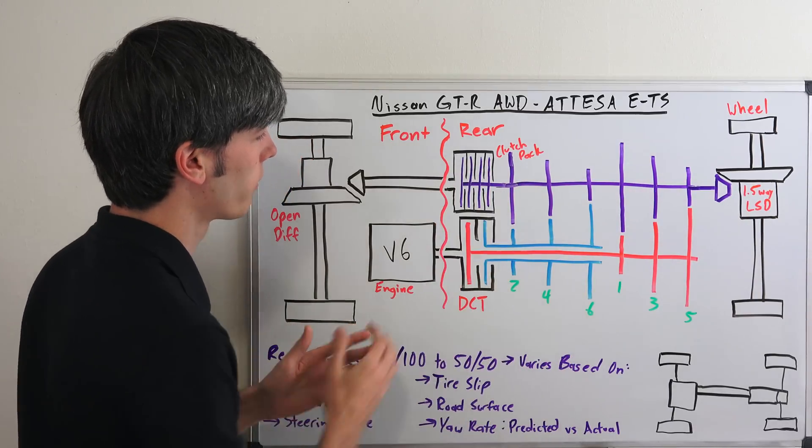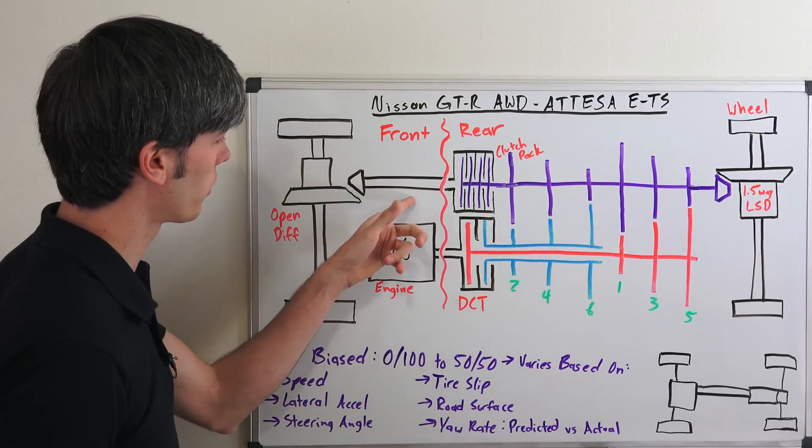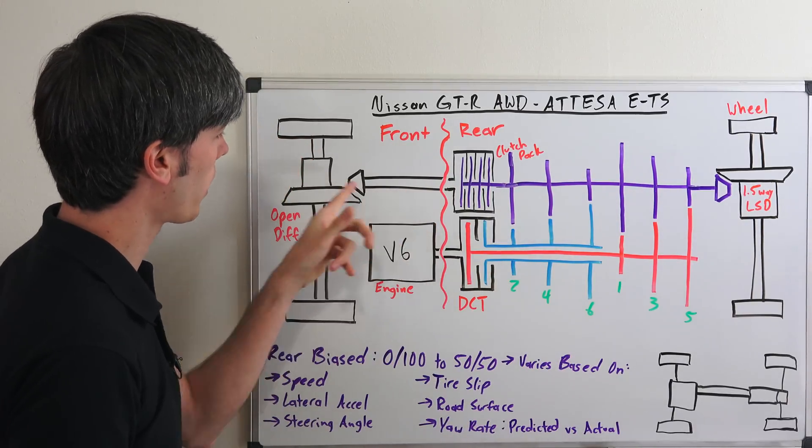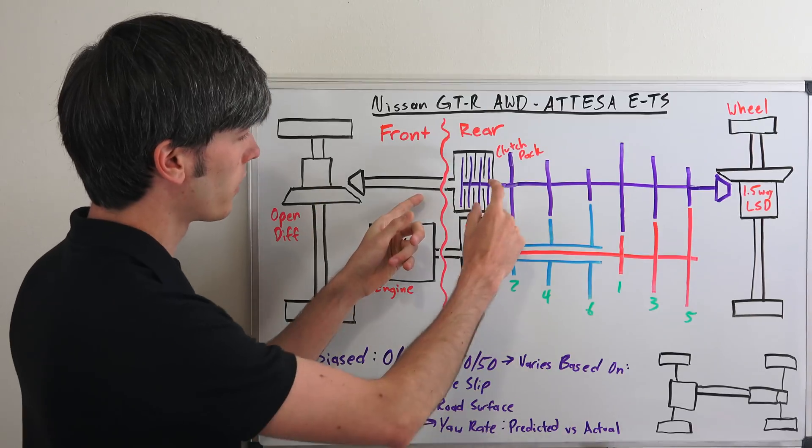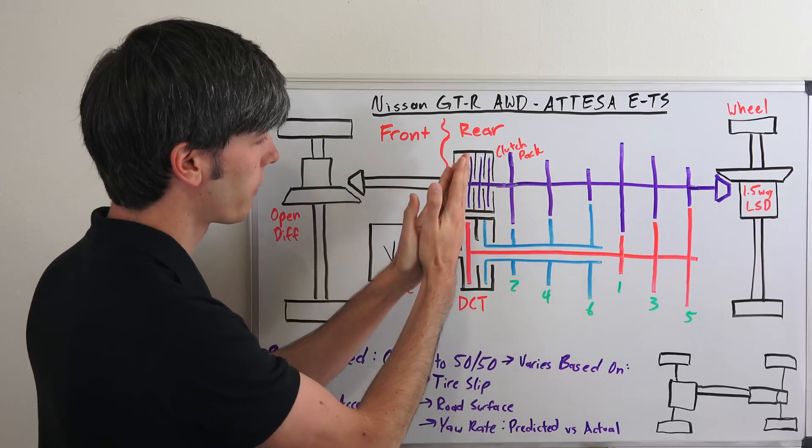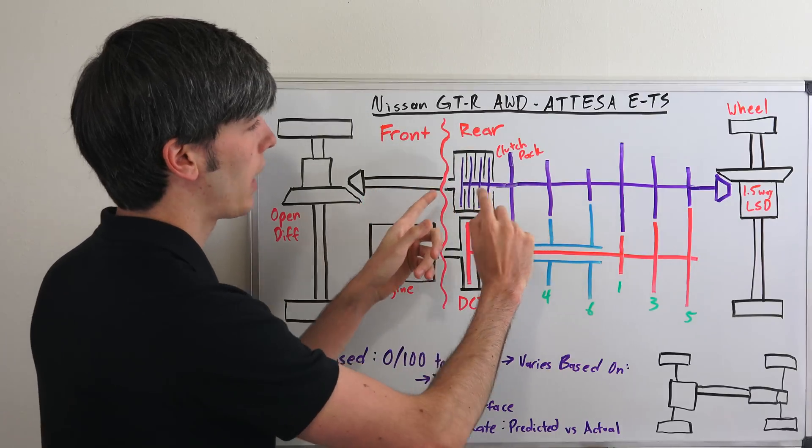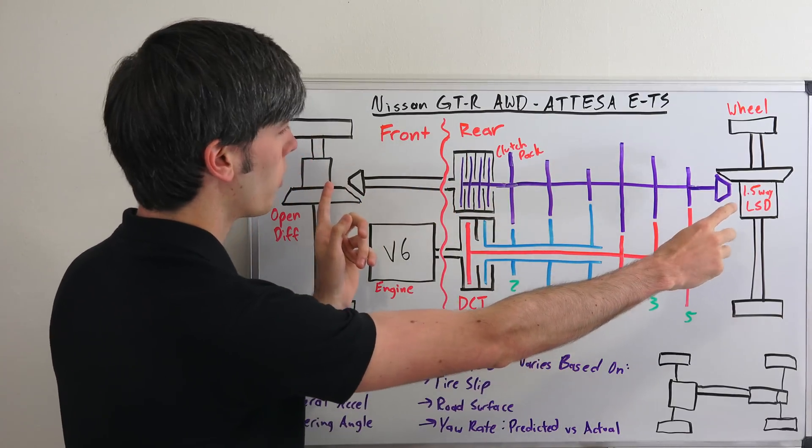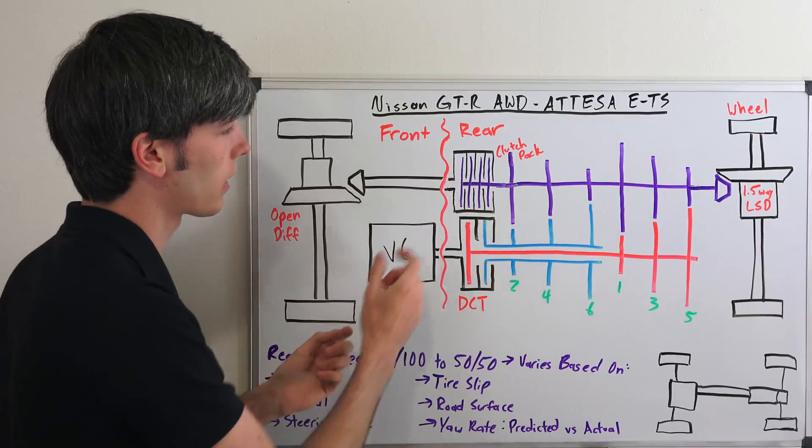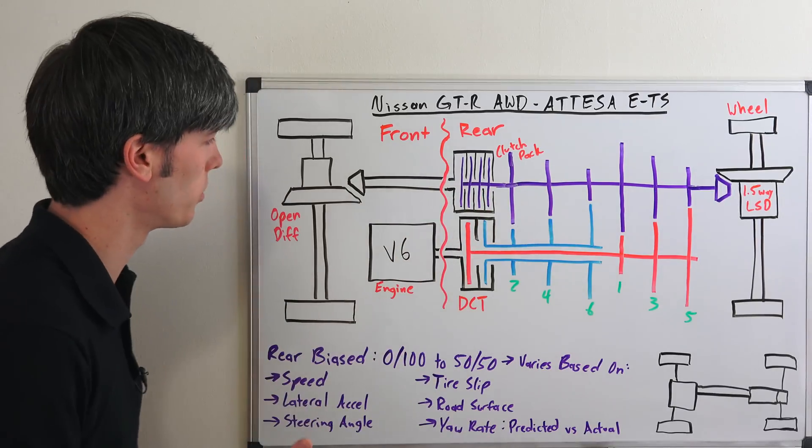Then on the other side of this we have this clutch pack here which connects with this axle drive shaft which is going to the front axle. And so here you've got this clutch pack. And if that clamps down, now you have power and you've got a 50-50 split going to the front and the rear. And so you can vary that pressure of that clutch pack to vary the torque distribution.